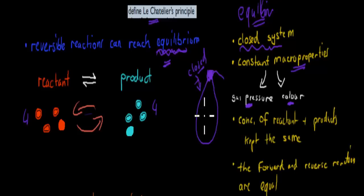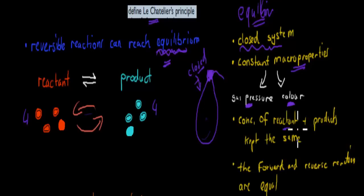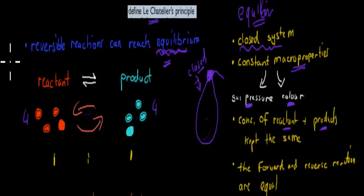For example, if the color were to change in the Coke bottle, that would mean something has changed in the reactant-product ratio, because the color comes from the molecules inside. So if the color is constant, the reaction is probably constant as well. Third, we need to make sure the concentration of reactants and products are kept the same. For example, if the ratio is one-to-one, that means for every reactant we have one product. It doesn't have to be one-to-one — it could be five reactants to one product — but the important part is that it's kept constant.